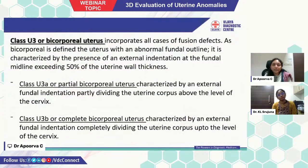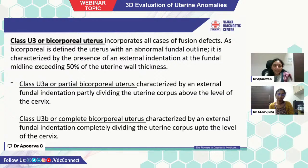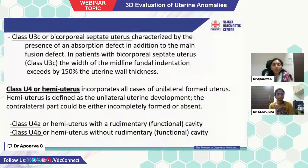Class U3 or bicorporeal uterus incorporates all cases of fusion defects. It is defined as a uterus with an abnormal fundal outline, characterized by an external indentation at the fundal midline exceeding 50% of uterine wall thickness. It is divided into class U3A or partial bicorporeal uterus (external fundal indentation partly dividing the uterine corpus above the level of the cervix), class U3B or complete bicorporeal uterus (external fundal indentation completely dividing the uterine corpus up to the level of the cervix), and U3C or bicorporeal septate uterus, characterized by the presence of an absorption defect in addition to the main fusion defect.